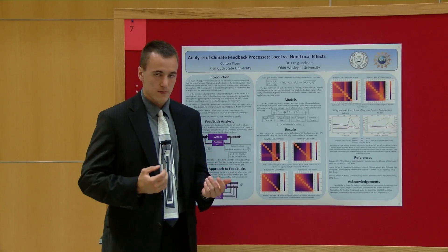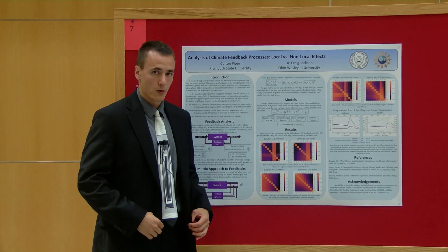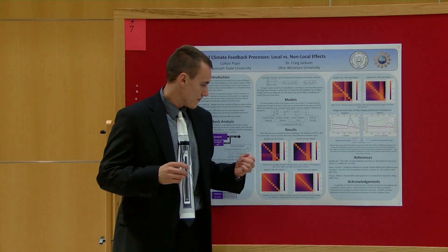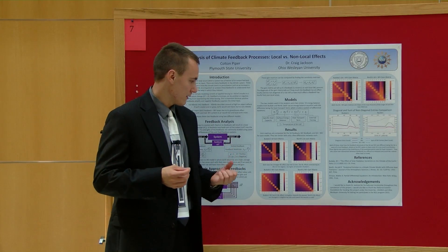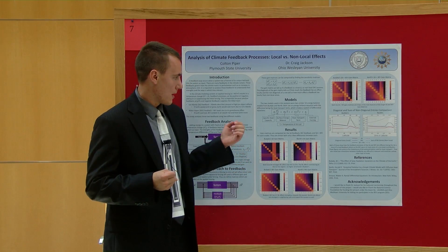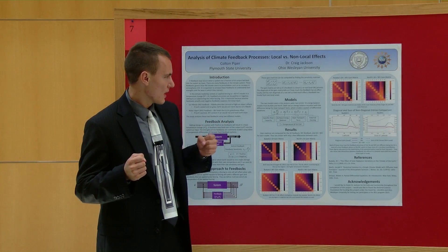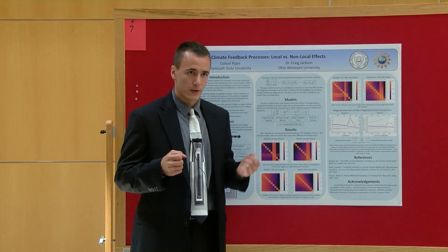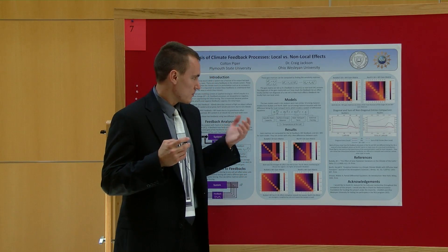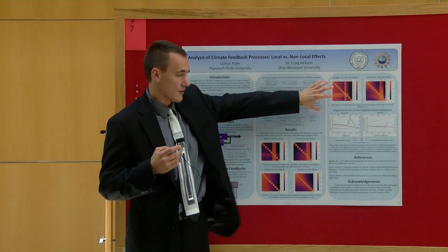The water vapor is more present in air near the equator compared to the poles. For North, the contributions are higher near nearby cells. These differences are all due to the heat transport term. The surface albedo plus water vapor feedback basically shows the two main features of the water vapor and surface albedo together.